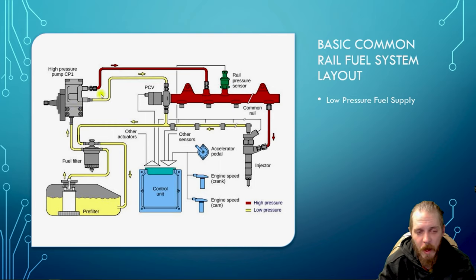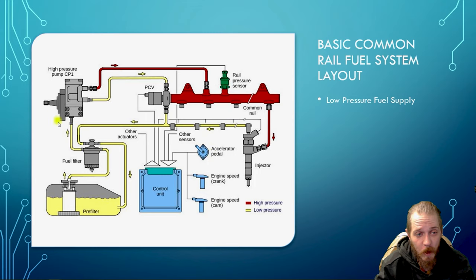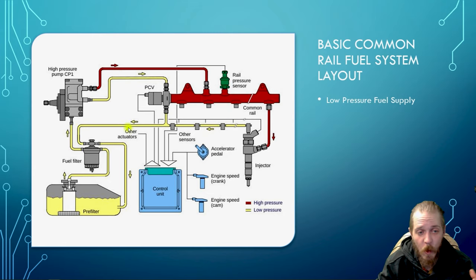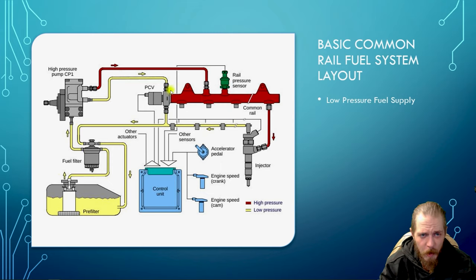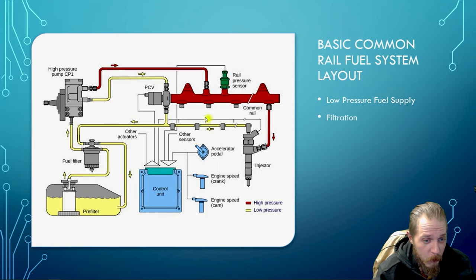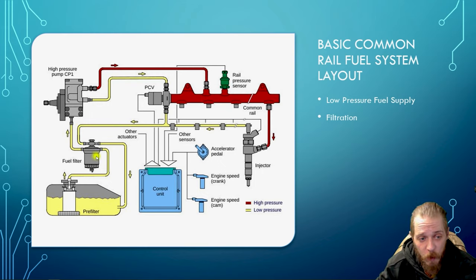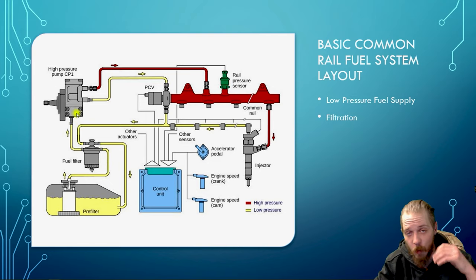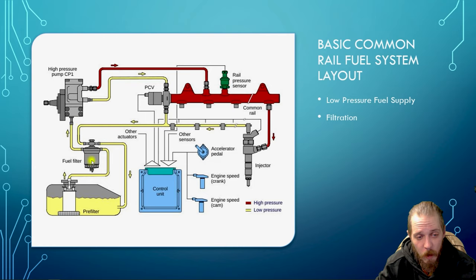Excessive wear in the high-pressure pump can cause excessive leak-by, which lowers your low-pressure fuel supply and makes it harder for the high-pressure system to build up to where it needs to be — no different than an engine losing compression as rings and cylinder walls wear. The controlled slippage flows through your pressure control valve return and back through bypasses to the tank. Some systems use only a primary filter, which will likely have a fuel water separator at the bottom.